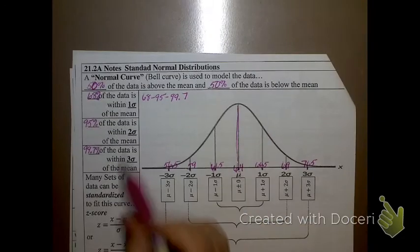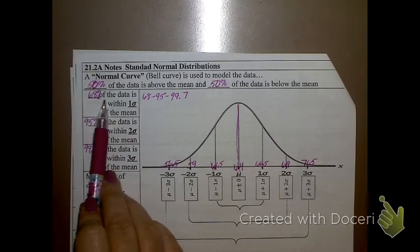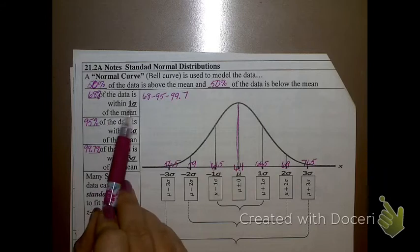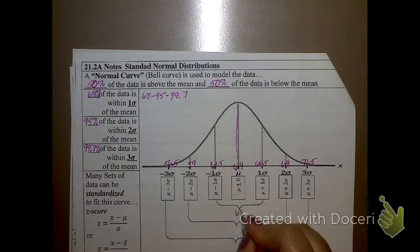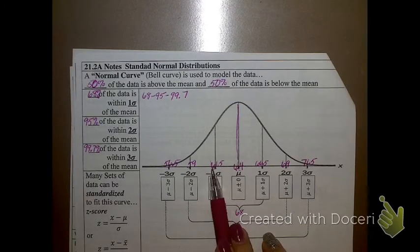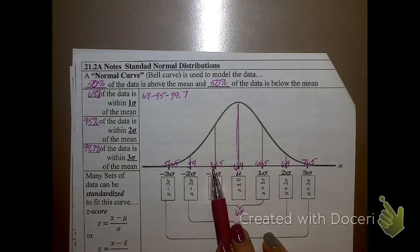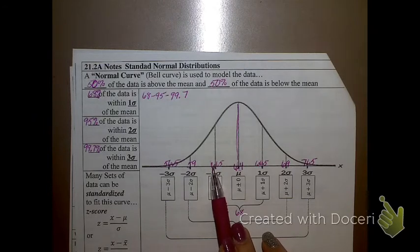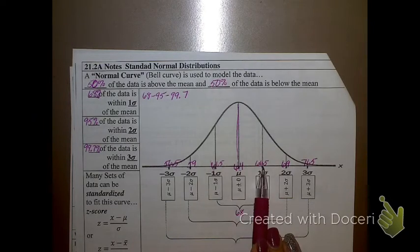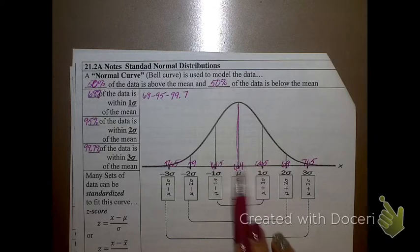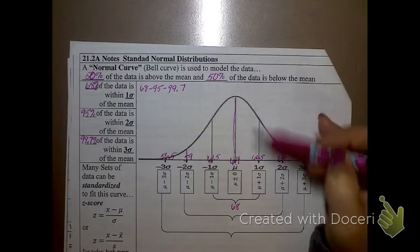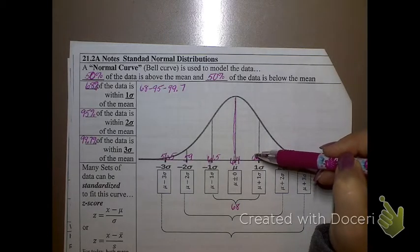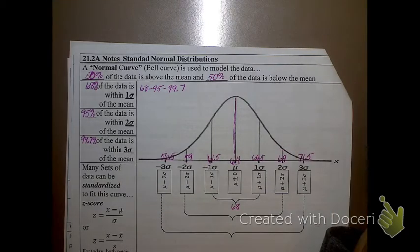These numbers right here. When I said 68% of the data is within one standard deviation of the mean, what that means is that 68% of the data falls between one standard deviation below, which is right here, and one standard deviation above. So, from here to here, this section, if you want to think about it as almost like area, that represents 68% of the data. Does that make sense?